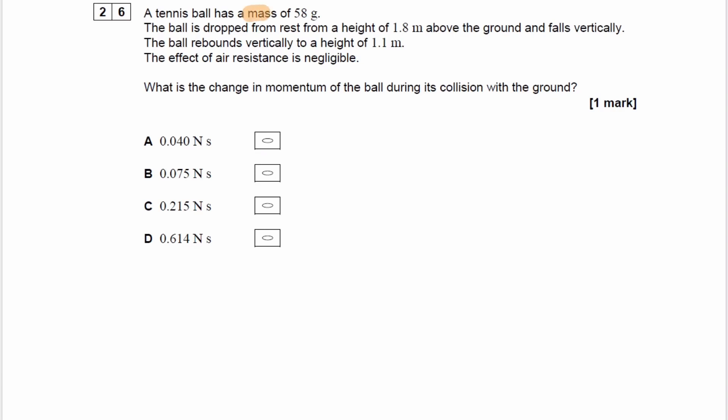A tennis ball has a mass of 58 grams. It's dropped from rest from a vertical height of 1.8 meters and it falls vertically. The ball rebounds vertically to a height of 1.1 meters. The effect of air resistance is negligible and we're trying to work out the change in momentum of the ball during its collision.